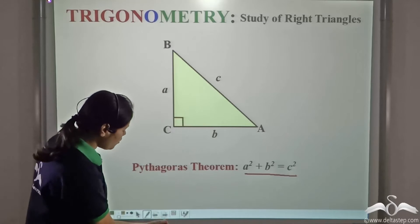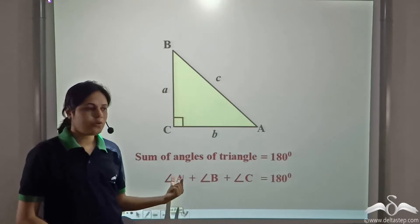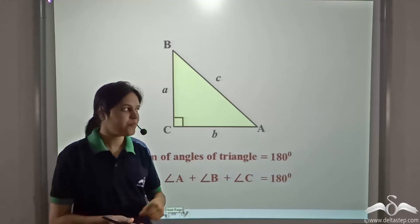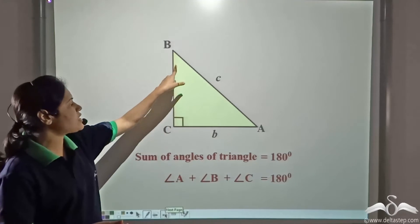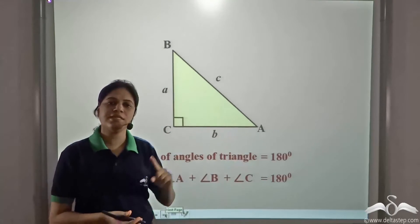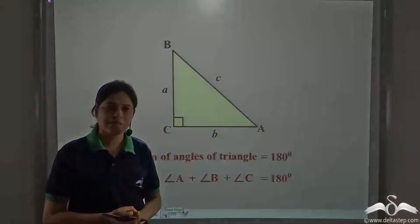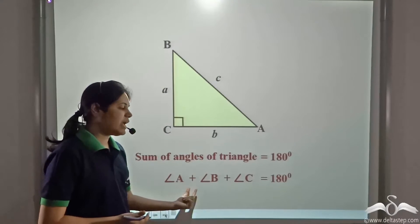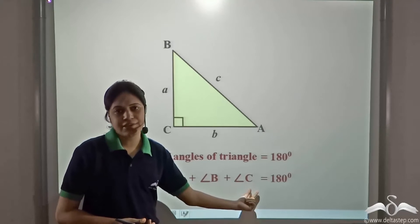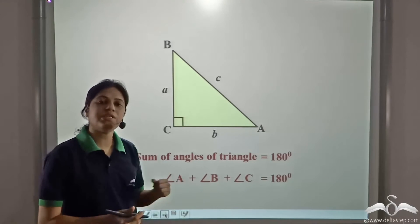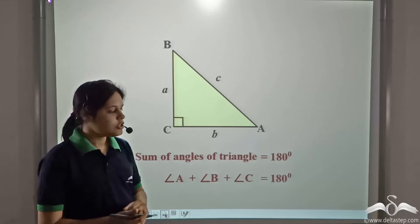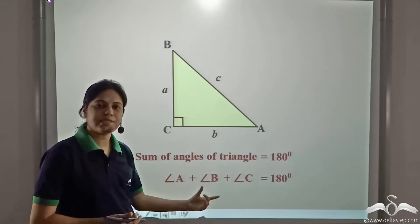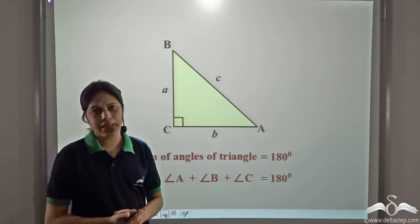Also, in a triangle, we know that the sum of the angles is equal to 180 degrees. So the sum of these three angles is equal to 180 degrees. If we know the measure of any two of these three angles, we can find the measure of the third angle as well.